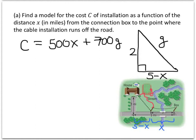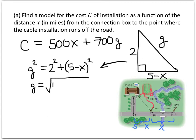So that means that my g I can figure out using my Pythagorean theorem. Remember that when we have a right triangle with the three sides, the hypotenuse squared is equal to the sum of the squares of the other two sides. That's going to be 2 squared plus 5 minus x squared. And that means that my g is going to be the square root of that. 2 squared is 4. And let's just leave 5 minus x squared as 5 minus x parentheses squared. Let's not try to simplify that just yet.